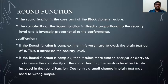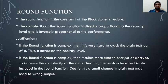Let us discuss the round function. The round function is the core part of the block cipher structure. The complexity of the round function is directly proportional to the security level and inversely proportional to the performance. The round function is essentially the algorithm. If the algorithm is too complex, it is harder for a hacker to decrypt your code, increasing security. However, as complexity increases, it is also harder to encrypt, so time taken increases and performance decreases.